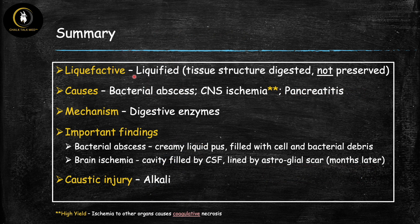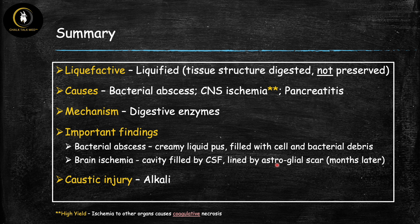In liquefactive necrosis the necrotic tissue is liquefied — the tissue structure is digested and not preserved, which distinguishes it from coagulative necrosis. The three main causes are bacterial abscesses, CNS ischemia, and pancreatitis; the underlying mechanism for all of them is digestive enzymes. In a bacterial abscess, creamy liquid pus forms containing cell and bacterial debris. In brain ischemia, over several months a cavity forms filled with cerebrospinal fluid and lined by an astroglial scar. Caustic injury by bases causes liquefactive necrosis.